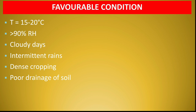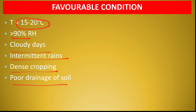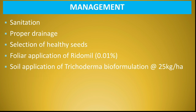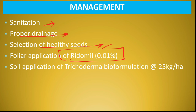Favorable conditions: 15–20°C temperature, more than 90% relative humidity, cloudy days, intermittent rain, dense cropping and poor drainage of soil. Management: Integrated disease management practices जैसे कि field sanitation, proper drainage of the field, selection of only healthy seeds, foliar application of Ridomil 0.01% — Ridomil में active chemical metalaxyl होता है।